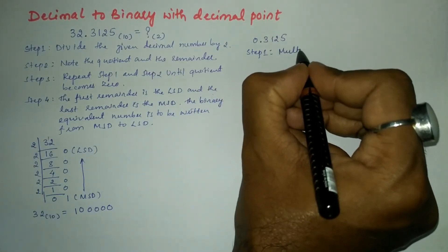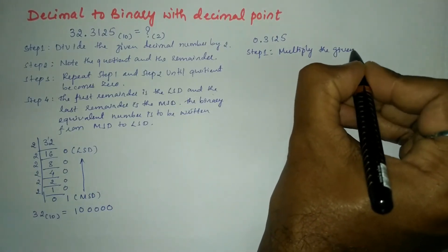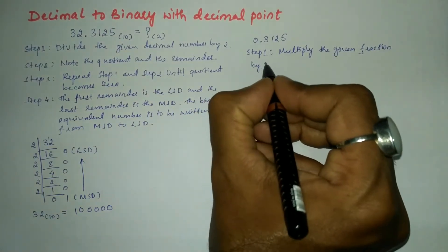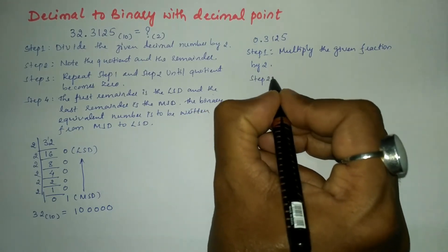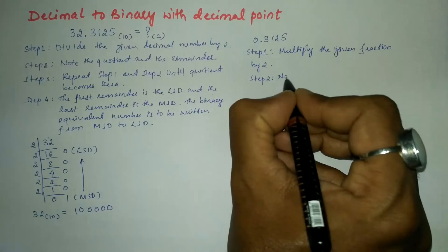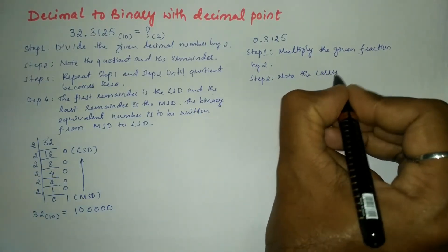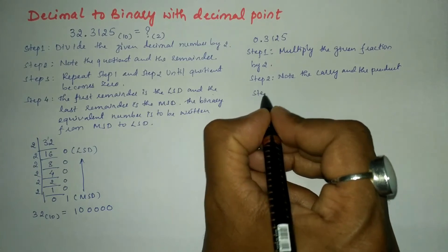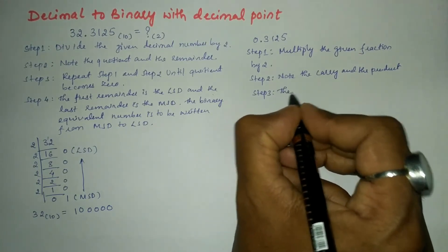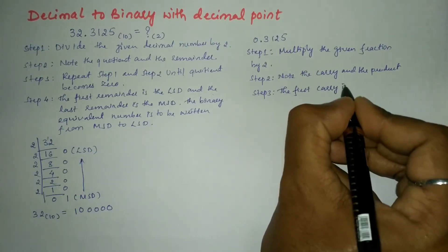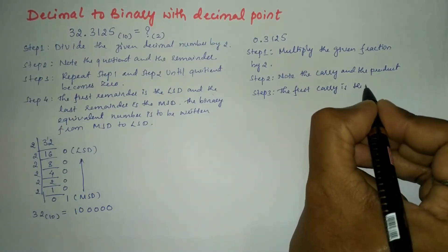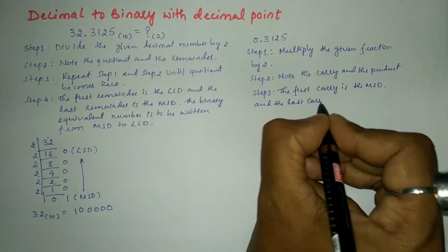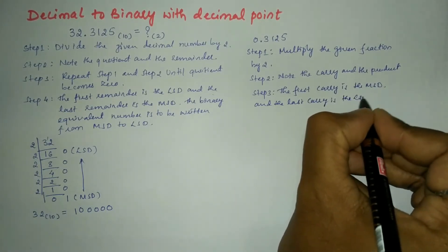Step 1: multiply the given fraction by 2. Step 2: note the carry and the product. Step 3: the first carry is the most significant digit and the last carry is the least significant digit.